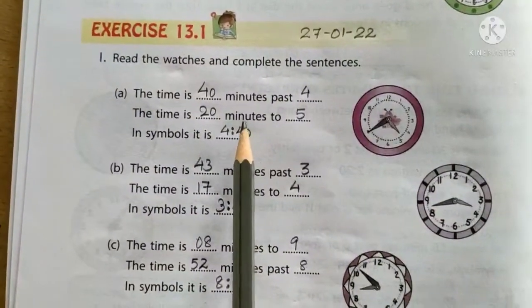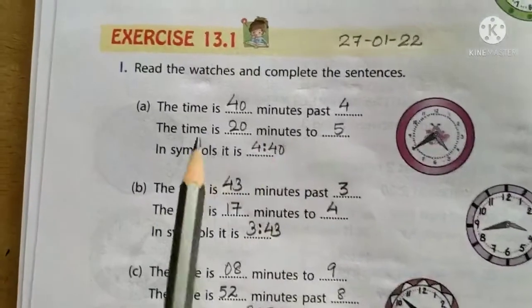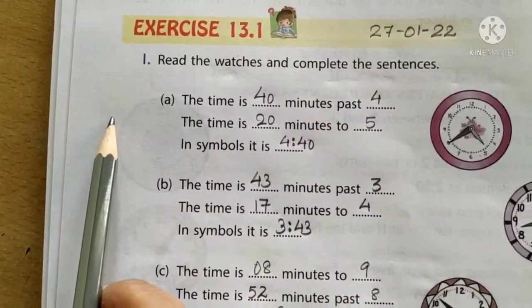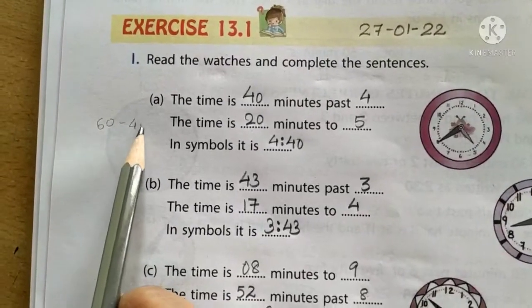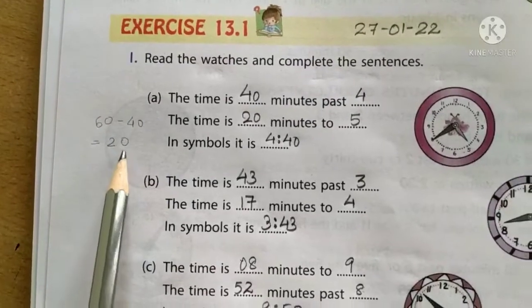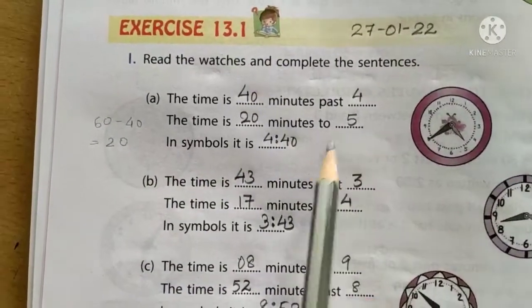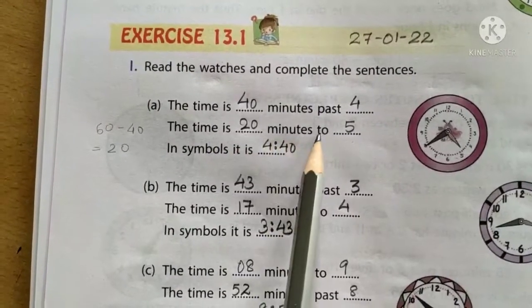It can also be written as the time is 20 minutes to 5. How do we write 20? Because the total minutes are 60, 40 minutes have already been passed, so 20 minutes are left. So after 20 minutes, it will be the next hour. So we can write it as the time is 20 minutes to 5.